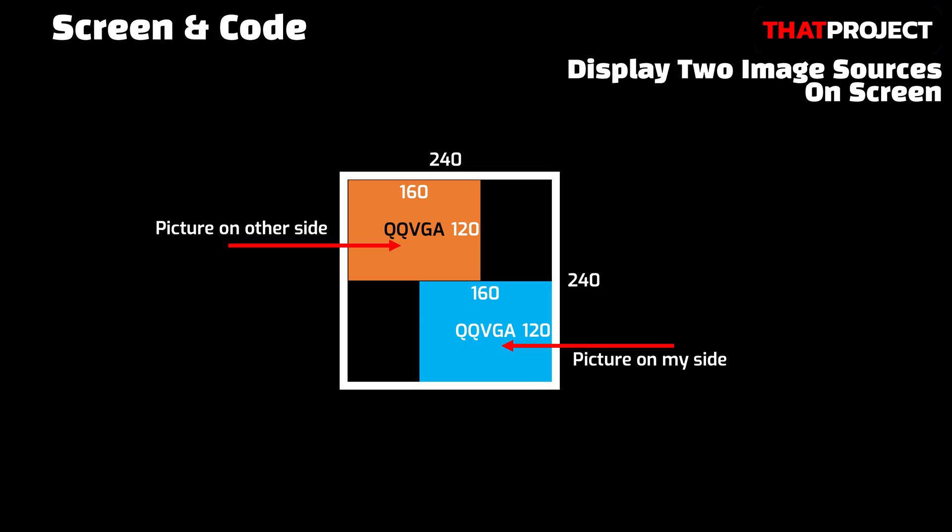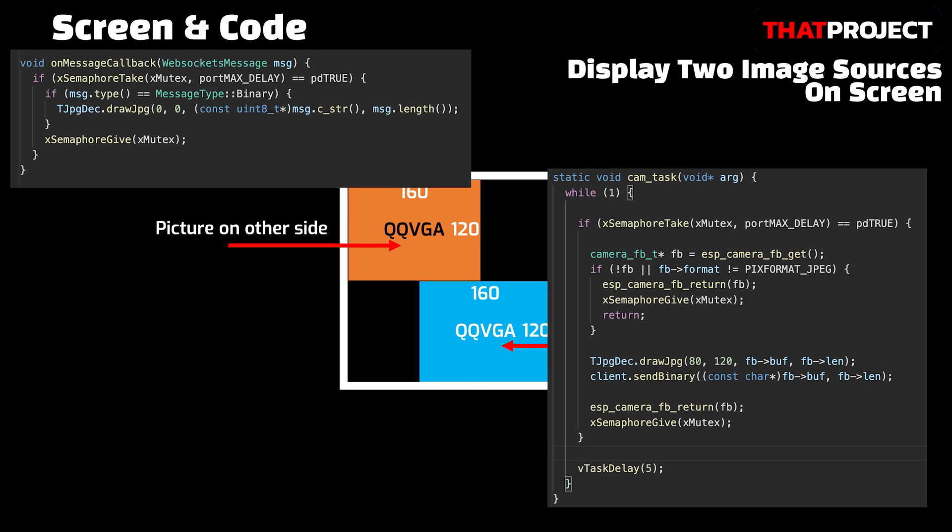First, let's talk about drawing the screen on the ESP32. Since the screen resolution is 240x240 square, it was easy to arrange. Both the outgoing image and the incoming image have a resolution of 160x120, so it was easy to position the two images. The image from the camera is displayed in the bottom right corner and the image received from the server is output in the top left corner. The code received from the server is handled by the onMessage callback of WebSocket. If the incoming image is a binary type, it's directly drawn at 0,0 coordinates.